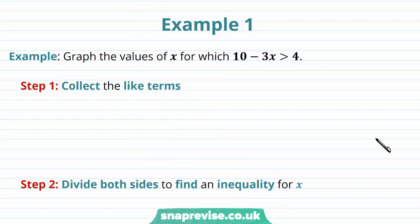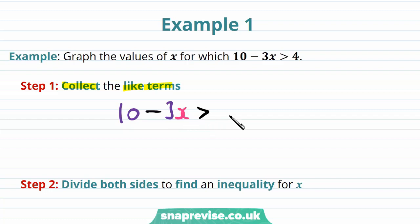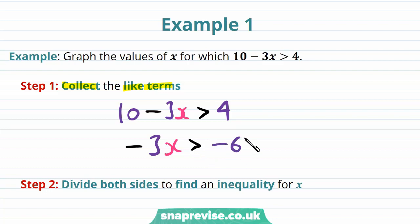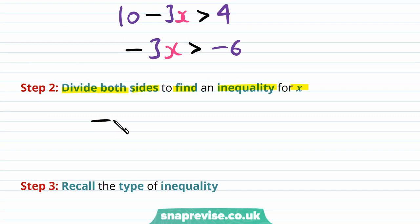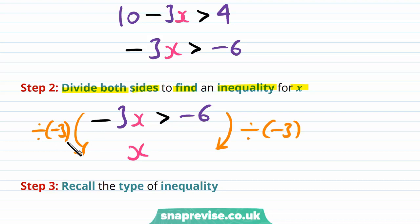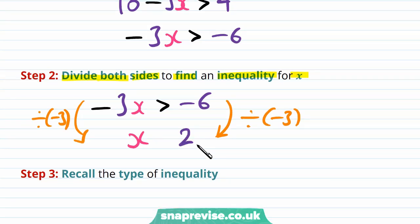Our first example asks us to graph the values of x for which 10 minus 3x is strictly greater than 4. Step 1: collect like terms. We have 10 minus 3x > 4, so minus 3x > 4 minus 10, giving minus 3x > minus 6. Step 2: divide both sides to find an inequality for x. Dividing both sides by minus 3 gives x on its own, and the result is x < 2. We divide by a negative, so we reverse the inequality.